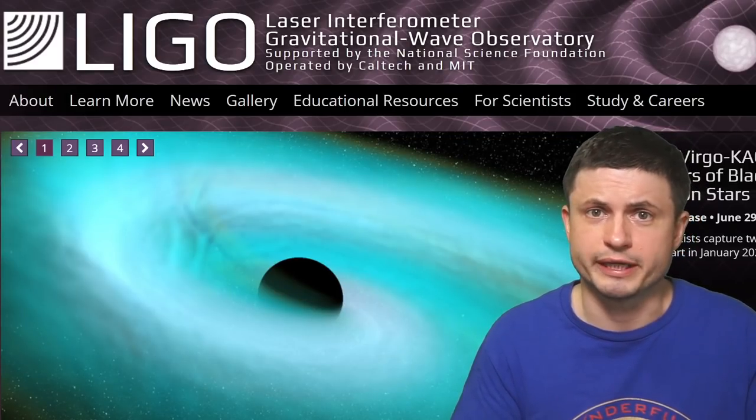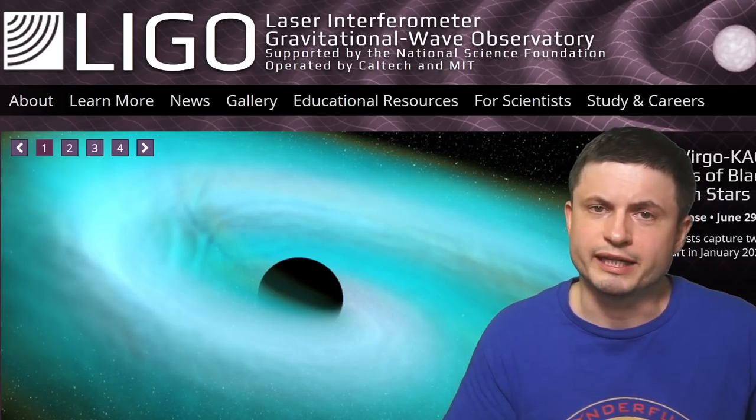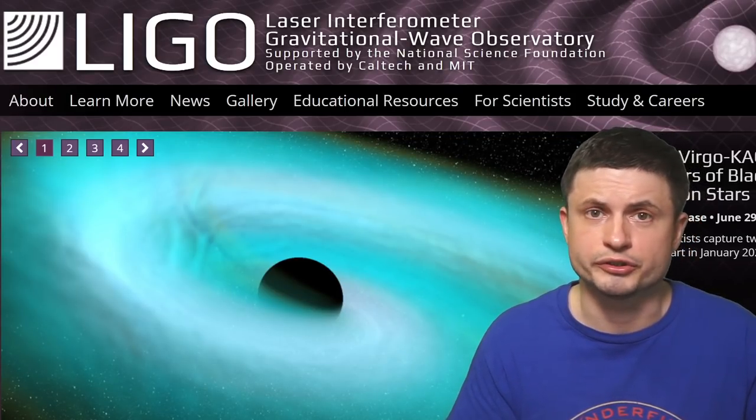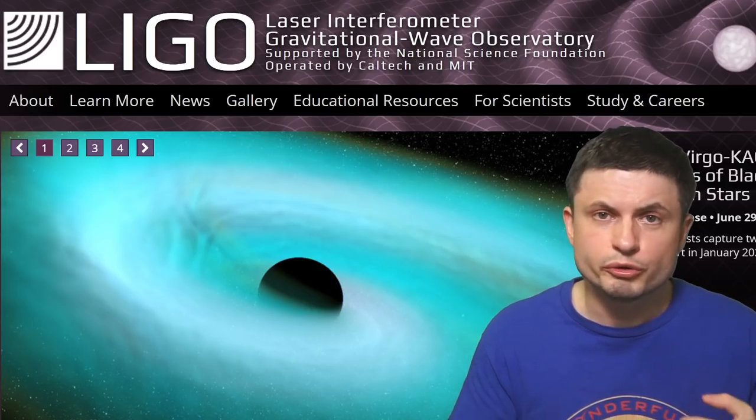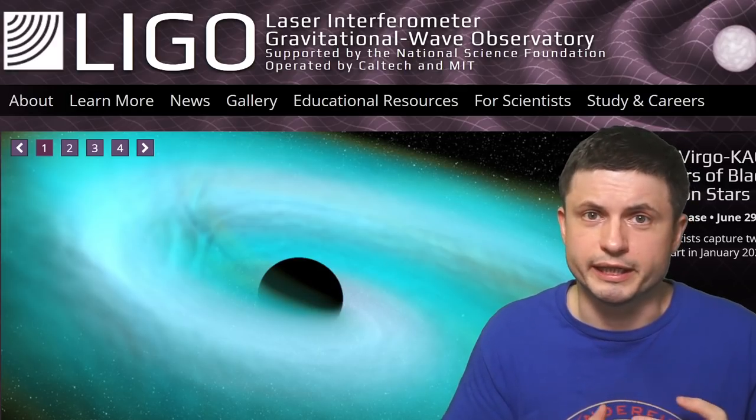And so why haven't we done it yet? Well, it's important to understand that at the moment, we're only able to detect an extremely narrow frequency of gravitational waves. With the most prolific detector, the LIGO detector, only being able to detect frequencies between about 10 Hz and 10 kHz, with most frequencies being somewhere in between that.